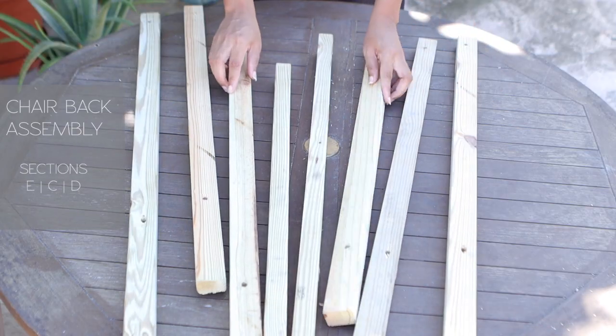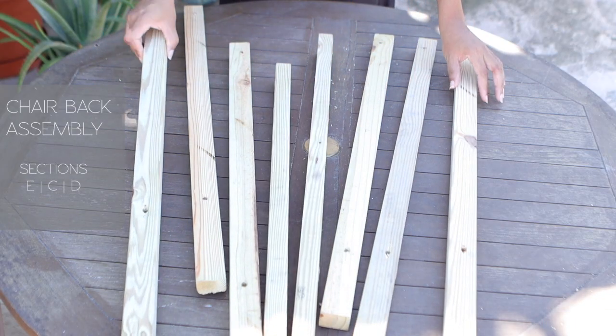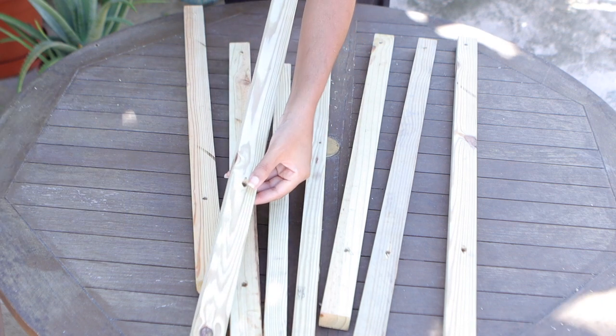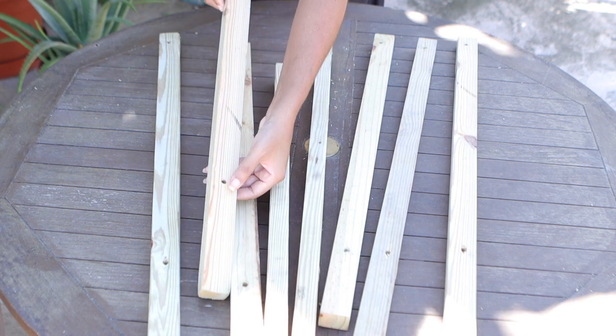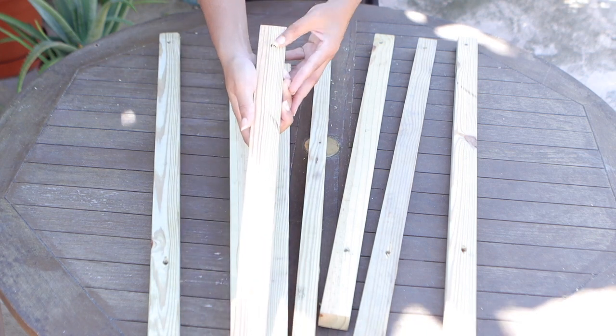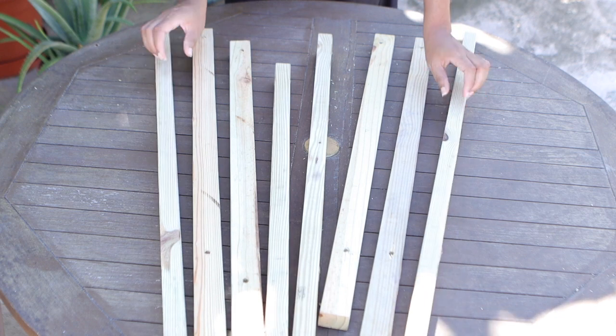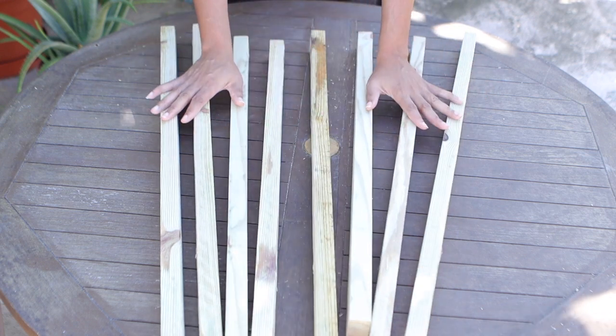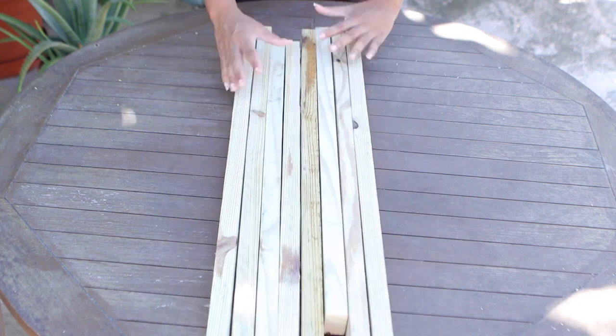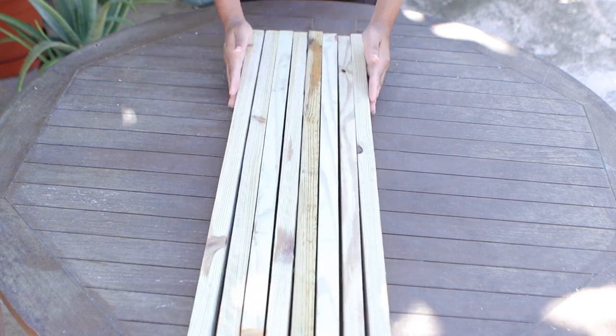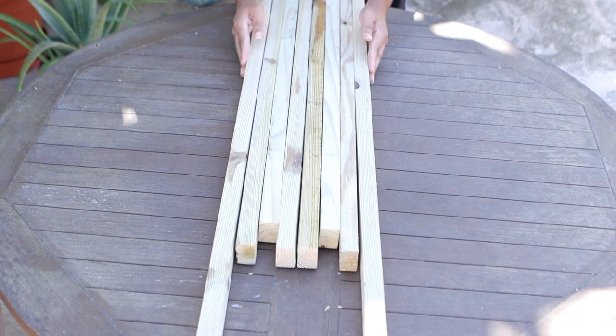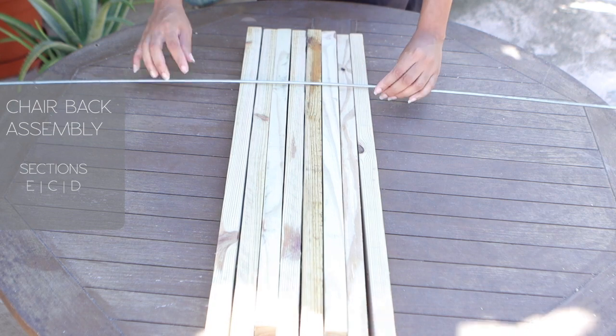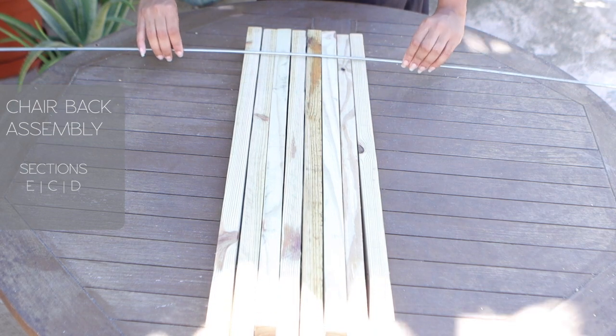To assemble the back rest of the chair, you should have a total of eight pieces of wood. Each piece should have the first hole drilled on the wide face of the wood at 1.5 inches from the left edge. The second hole should be drilled on all eight pieces at 25 inches from the same left edge. Do not measure the 25 inches from the right or the opposite edge of the first hole. All of your measurements and guides should be marked off the same edge.